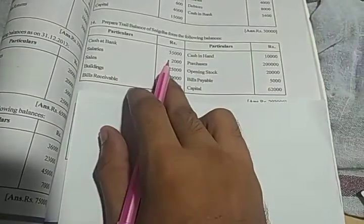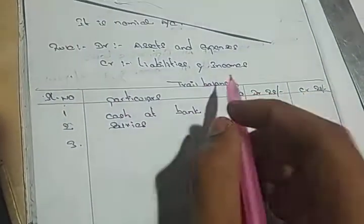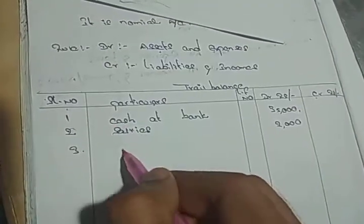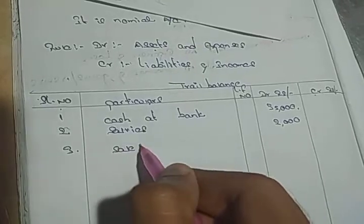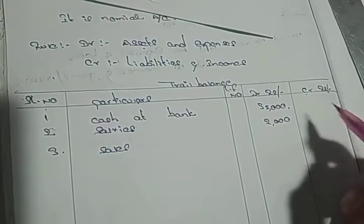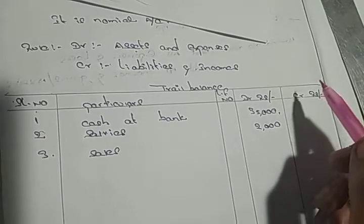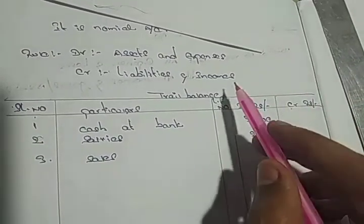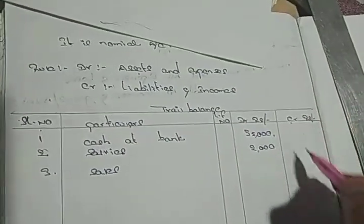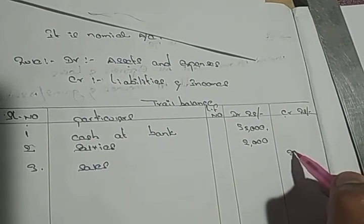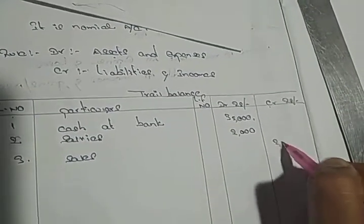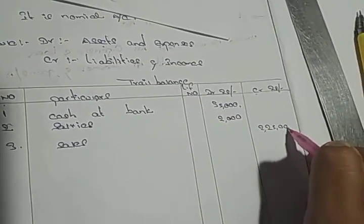Next, third: sales. This is one type of income, credit. Books, missionary, double income amount: 22,000—sorry, 25,000.